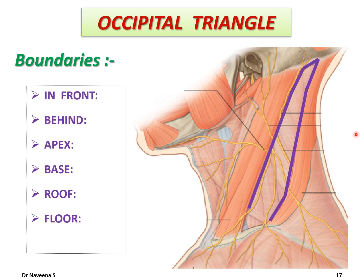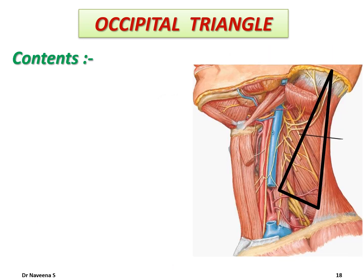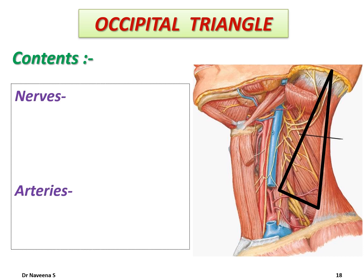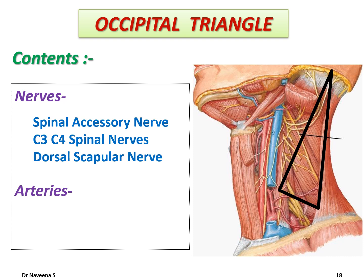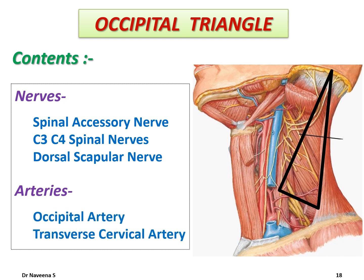The occipital triangle almost shares the boundaries of the posterior triangle except that its base is formed by the inferior belly of the omohyoid, and the floor is formed by only five muscles from semispinalis capitis to scalene medius. Contents of the occipital triangle are classified into nerves and arteries. Nerves are the spinal accessory nerve, C3–C4 spinal nerves, and the dorsal scapular nerve. Arteries are the occipital artery and the transverse cervical artery.